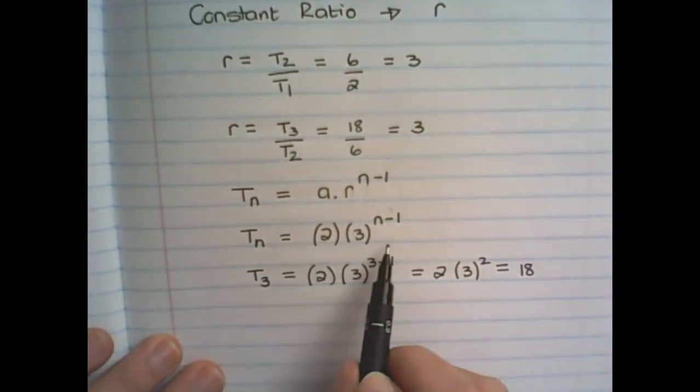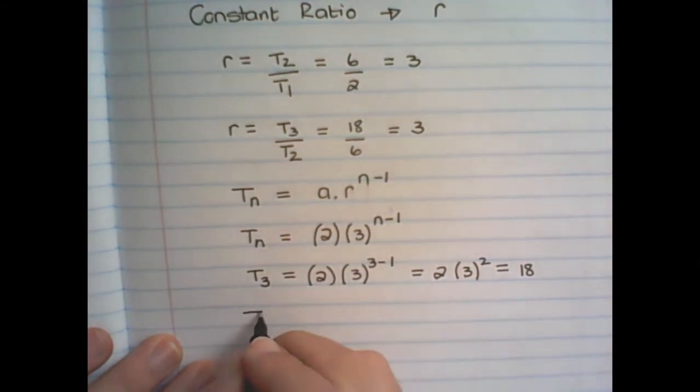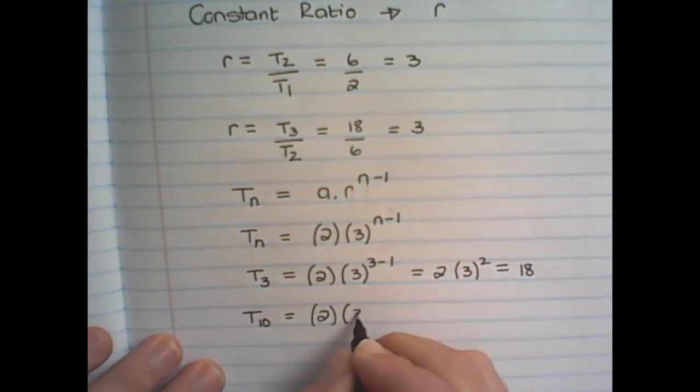The general formula, or the general term, would also allow us to find any term in the pattern. Let us say, for example, we want to find the value of the 10th term. That is 2, times 3, to the power of 10 minus 1.